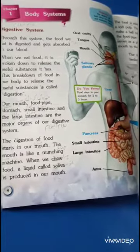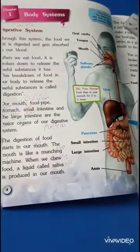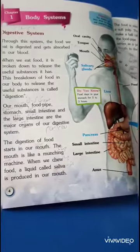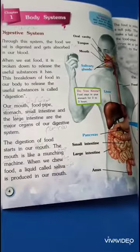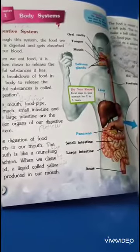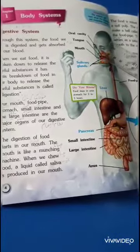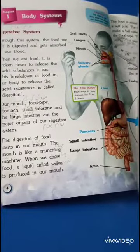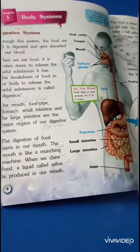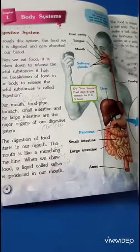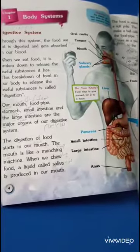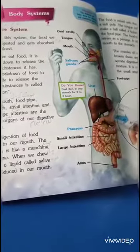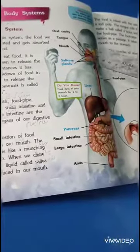First, the food is in the mouth. In the mouth there are teeth, tongue, and salivary glands. The food is chewed by the teeth. A liquid called saliva is produced and mixed with the food, making it soft. The tongue then rolls the food and moves it down through a canal into the stomach. This canal is called the food pipe, or esophagus.